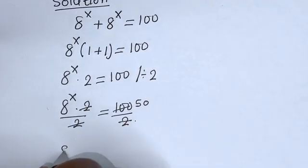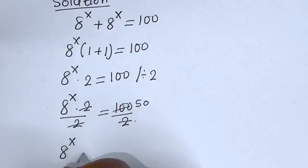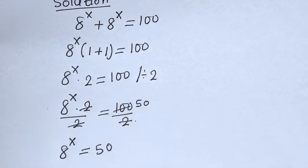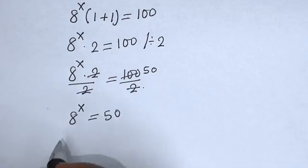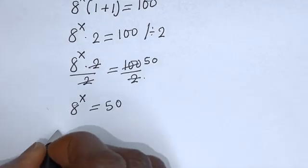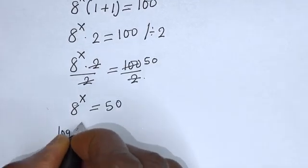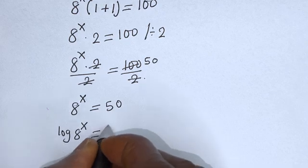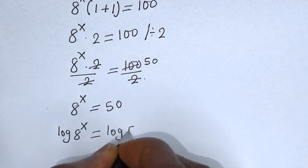This gives us 8 raised to power s multiplied by 2, divided by 2, is equal to 100 divided by 2. These cancel to give 1, leaving us with 8 raised to power s is equal to 50. Let us take the log on both sides of this equation: log of 8 raised to power s is equal to log 50.